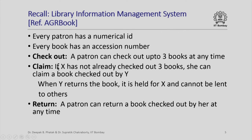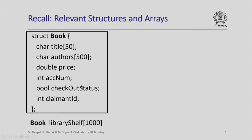What is a claim? If patron X has not already checked out three books, then we will allow her to claim one book that is checked out by another patron Y, and when patron Y returns this book, it is going to be held for patron X and not lent out to others. The return functionality is that a patron should be allowed to return a book that she had checked out earlier. A good way of implementing this is to identify a book object and a patron object, implemented as C++ structures.